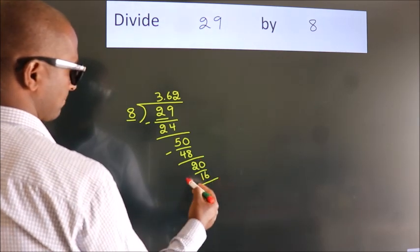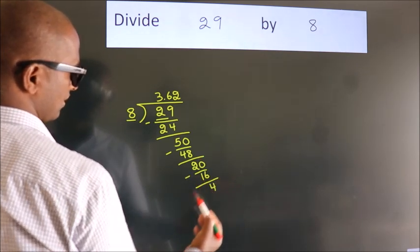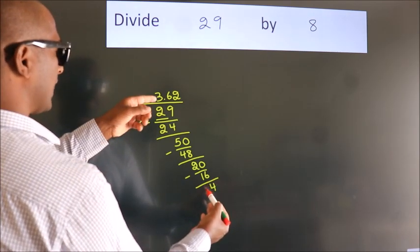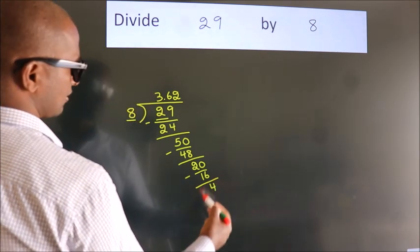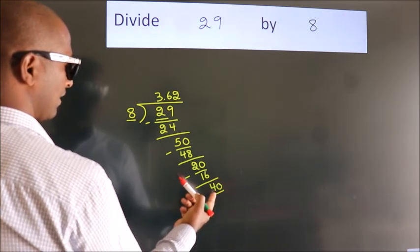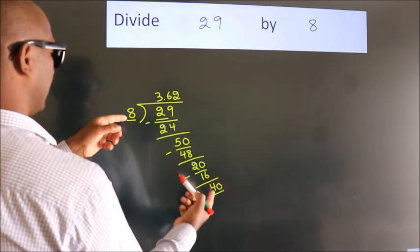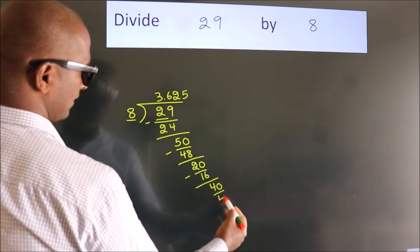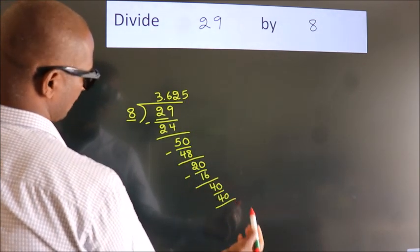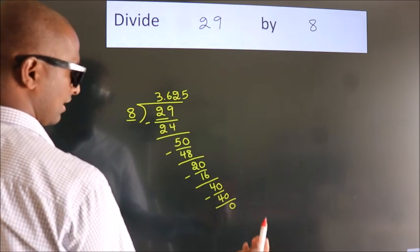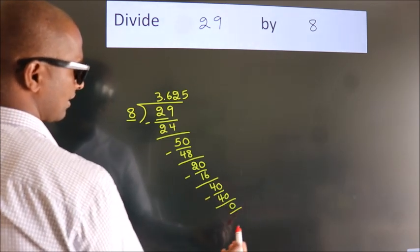Now we subtract. We get 4. After this, we already have the decimal, so directly take 0. So 40. When do we get 40 in the 8 table? 8 times 5 is 40. Now we subtract. We get 0. Here we got remainder 0.